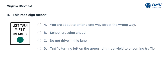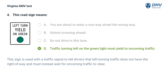This road sign means: A. You are about to enter a one-way street the wrong way, B. School crossing ahead, C. Do not drive in this lane, D. Traffic turning left on the green light must yield to oncoming traffic. The correct answer is D. This sign is used with a traffic signal to tell drivers that left-turning traffic does not have the right of way and must instead wait for oncoming traffic to clear.